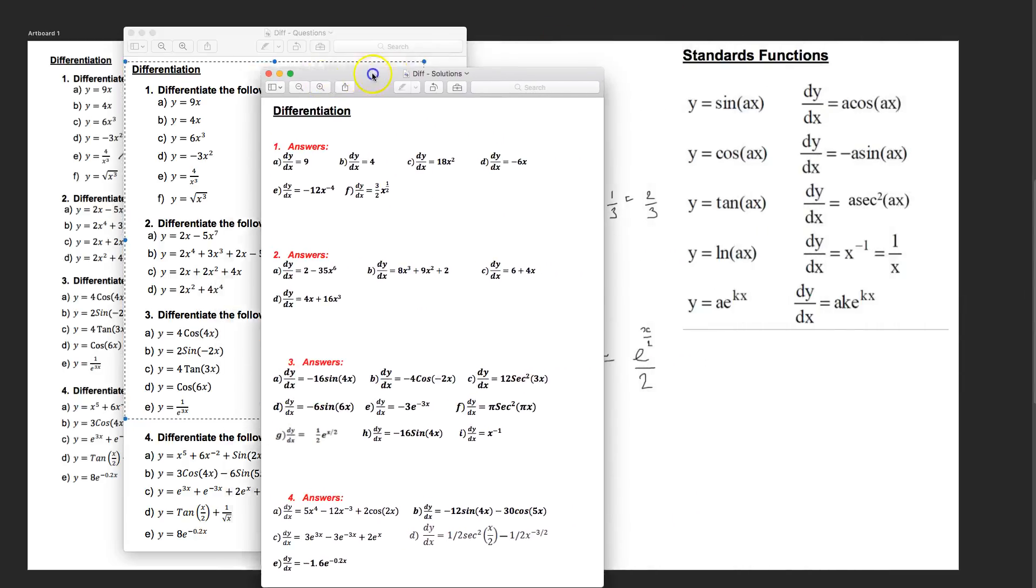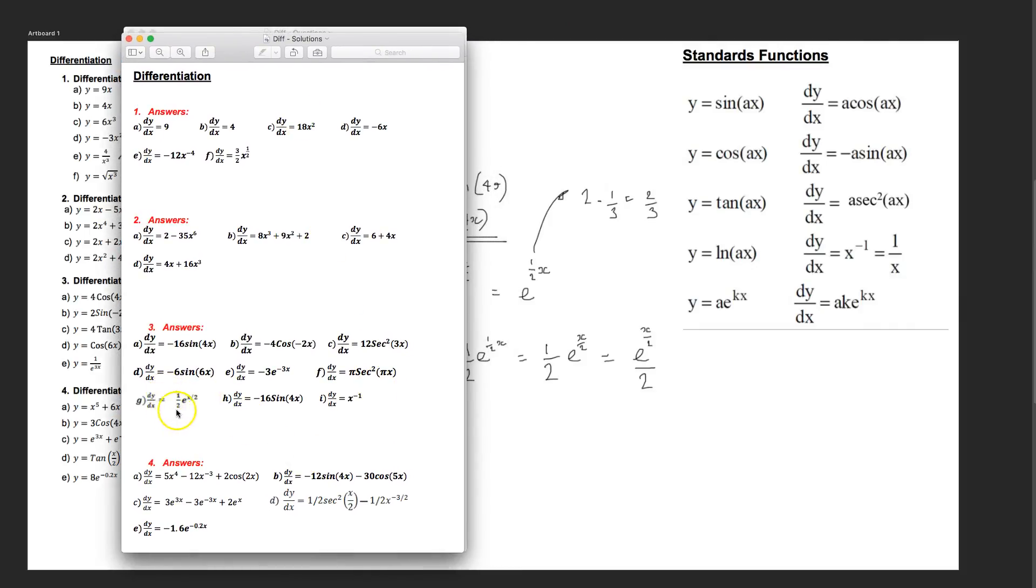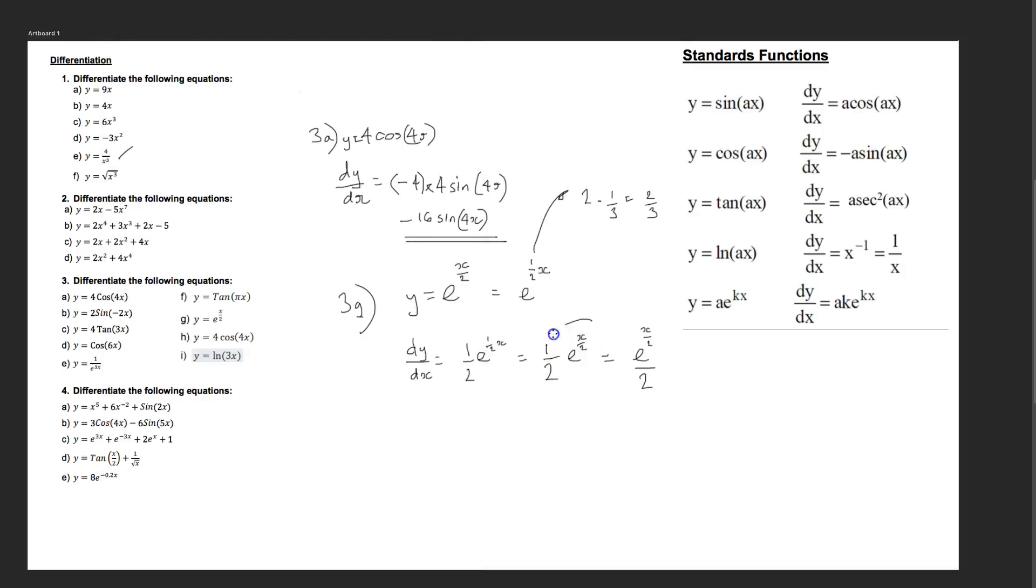Let's have a look at our solutions. Let's see what we've got here. This is for 3g. So it's a half e to the x over 2. And they've left it in that statement. It is actually a little simpler in that form there.